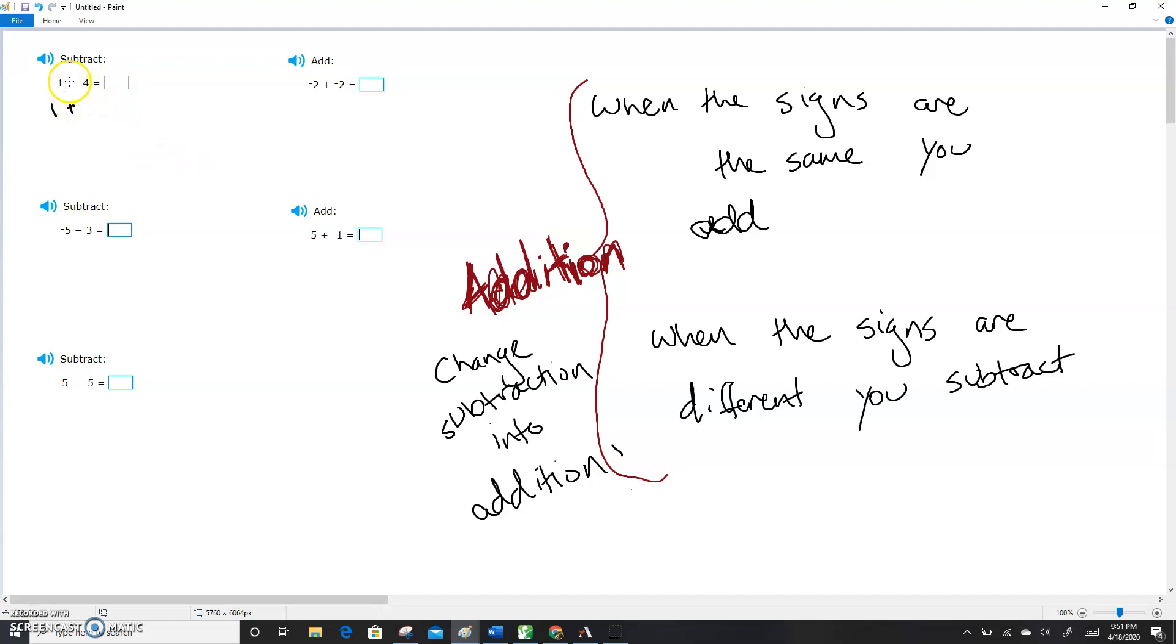Now we've changed this sign, so that means we need to change the sign of the second number. So that negative four is going to become a positive four. The signs are the same. They're both positive. So we add, and we get five.